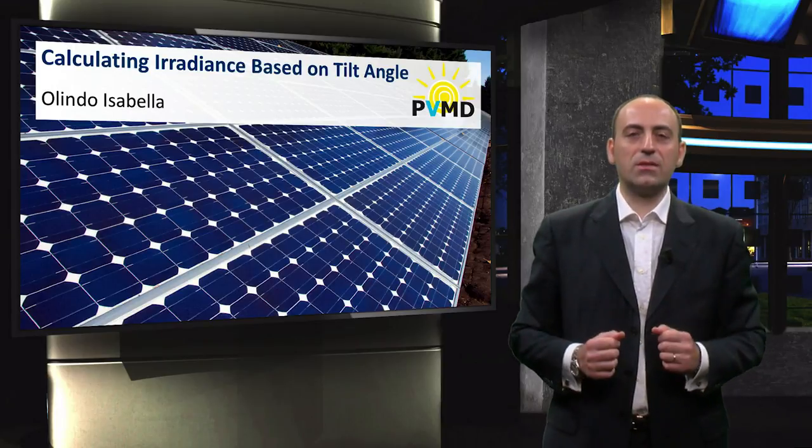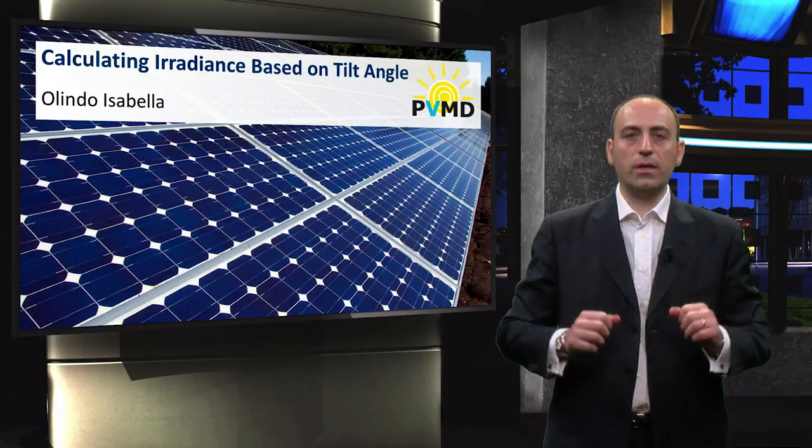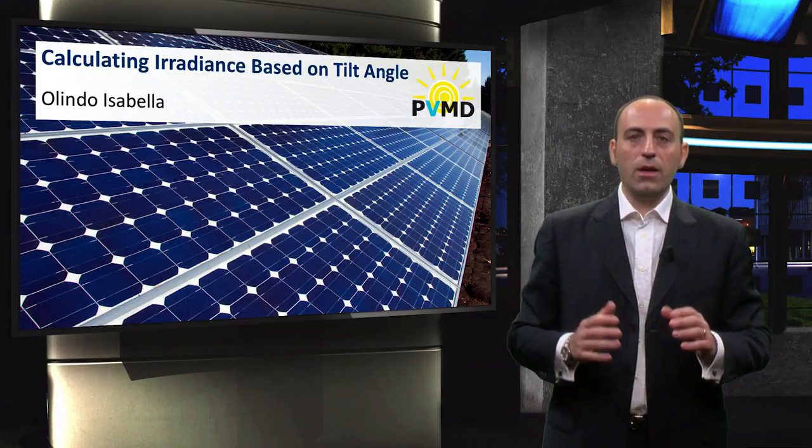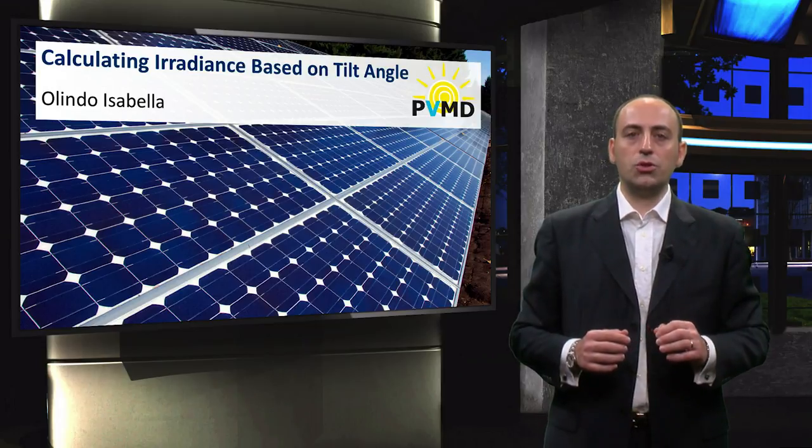In the previous videos, we have discussed the position of the Sun with respect to a PV module lying horizontally on the ground. However, if you want to increase the irradiance on the surface of the module, then the module should be tilted.